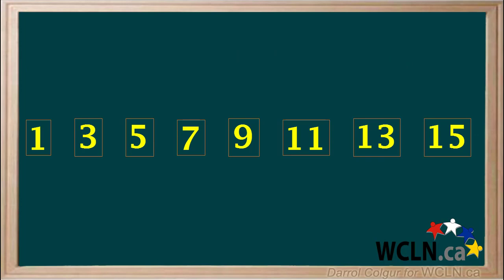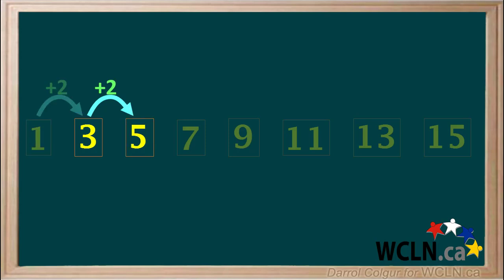Let's look at this set of numbers. Can you see any pattern here? The first thing you might notice is they are all odd numbers. Notice that to go from 1 to 3, we add 2. And to go from 3 to 5, we also add 2. To go from 5 to 7, we add 2. And to go from 7 to 9, we also add 2.